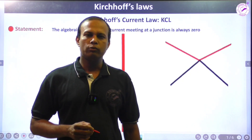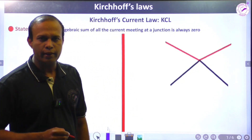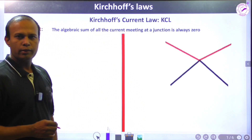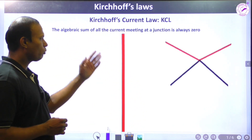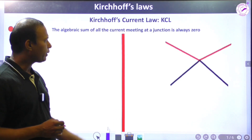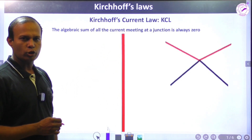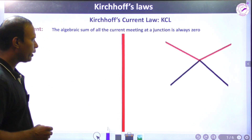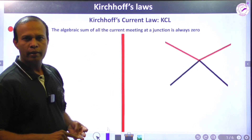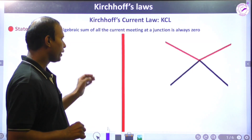In this video I would like to cover the most powerful and exciting technique of network solution, that is Kirchhoff's law. Kirchhoff formulated two basic laws for electricity: KCL, Kirchhoff's Current Law, and Kirchhoff's Voltage Law. These will be very useful for finding any branch current, any branch voltage, and any branch resistance in a network.